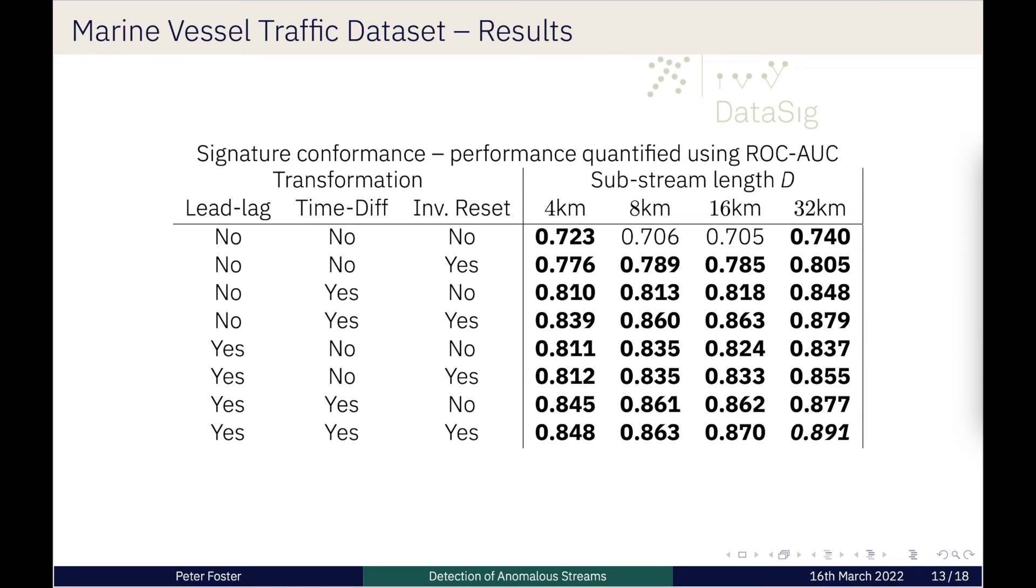That's exactly what we see, as quantified using the receiver operating characteristic area under the curve. We get some ability to distinguish between the short and long vessels, and that depends on the path length. This experiment tries to evaluate the effect of path length on ability to discriminate between the short and long vessels. We've taken the entire path for a given vessel, split it into sub-streams and used those sub-streams to perform anomaly detection. As the sub-stream length increases, we are better able to distinguish between the normal and anomalous vessels.